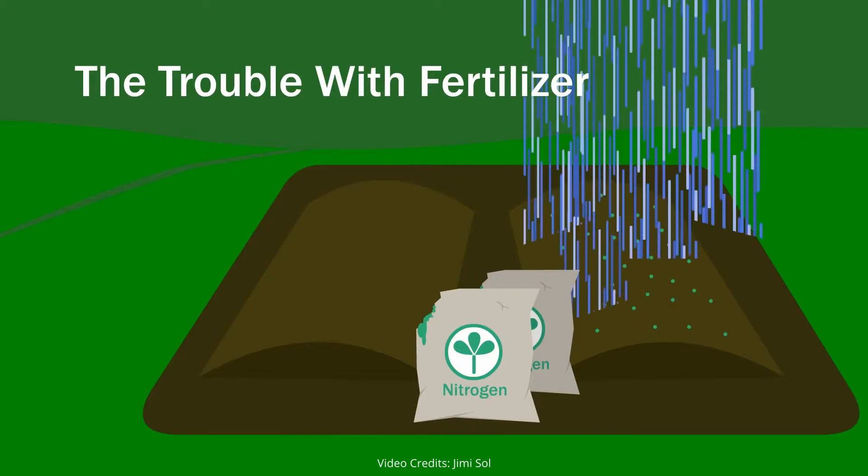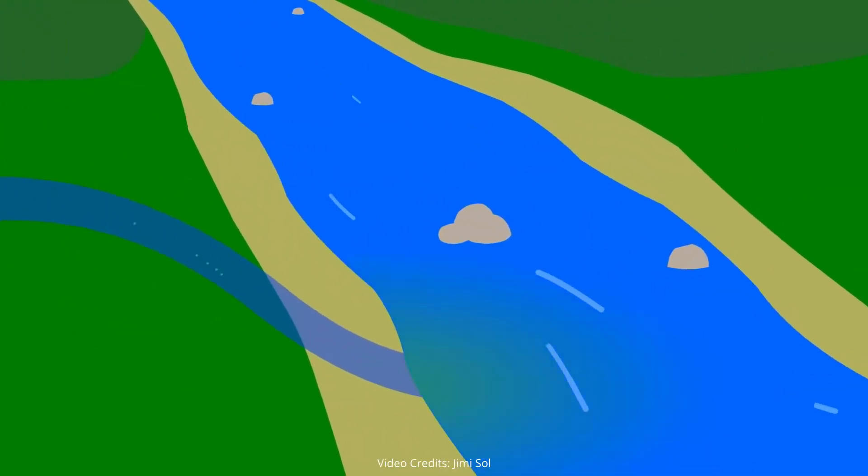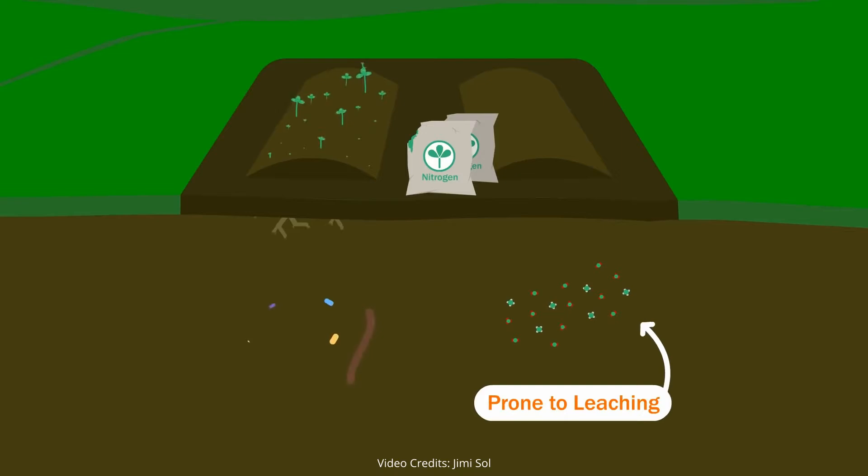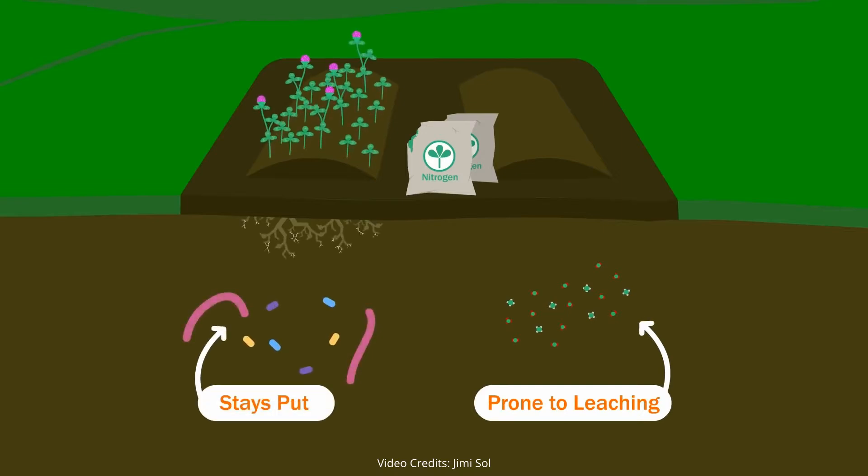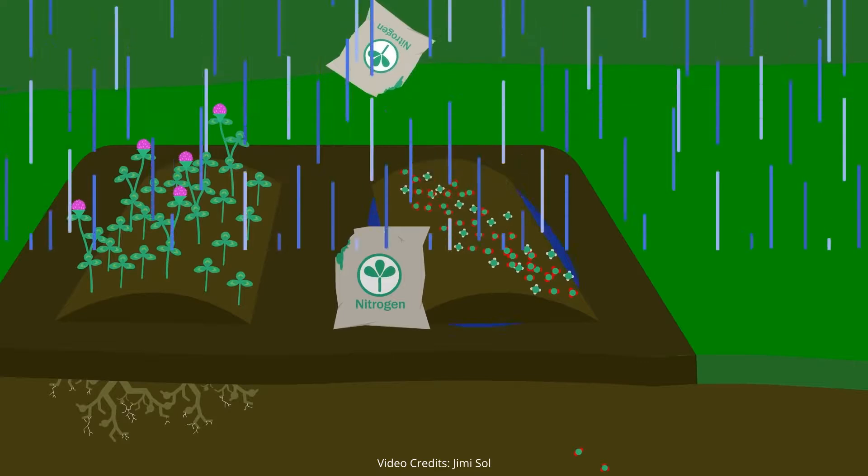You know how earlier I said that water can carry soil nitrogen away? This nitrogen ends up in rivers, which can disrupt the ecosystem by enabling algae to dominate. But remember, this only happens to loose nitrogen in the soil, and not to nitrogen embedded in organisms. And fertilizer adds pure nitrogen without the organisms. So when it rains, huge amounts of it run off and pollute the water.